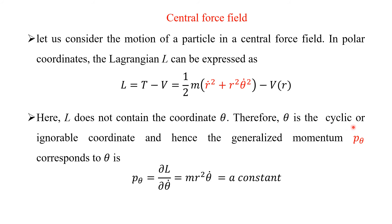Here, L does not contain the coordinate theta. If you see the expression, there is no theta term. Therefore, theta is a cyclic or ignorable coordinate. Hence, the generalized momentum p_theta corresponding to theta is equal to delta L over delta theta-dot. If you take the derivative with respect to theta-dot: the first term has no theta-dot; the second term r-squared theta-dot-squared differentiates to give 2 theta-dot, and the factor of 2 cancels, yielding m r-squared theta-dot, which is a constant.